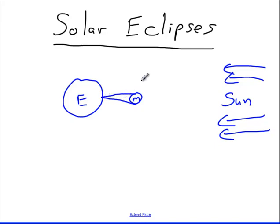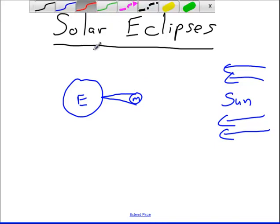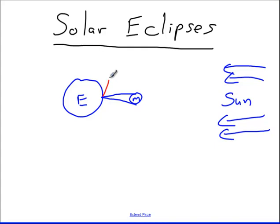The moon, being a lot smaller, casts a much smaller shadow. At this point, this is what we call the path of totality. If you happen to be there, you will get to see a total eclipse.